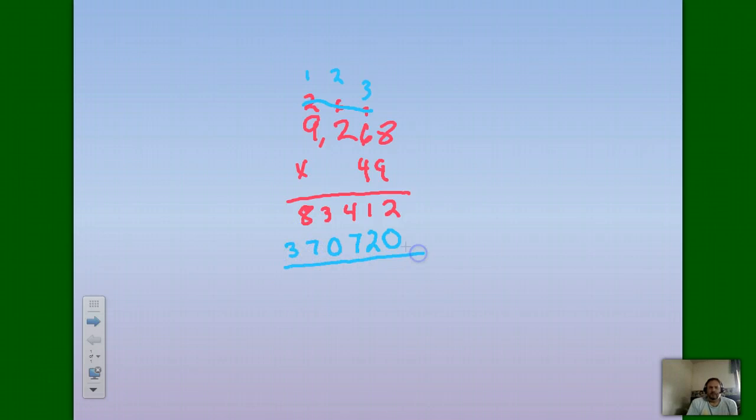Now we'll do our little answer here. We have 2 plus 0 is 2, 1 plus 2 is 3, 4 plus 7 is 11, carry the 1. 3 plus 1 is 4. Good going. And 8 plus 7 is 15, carry the 1.